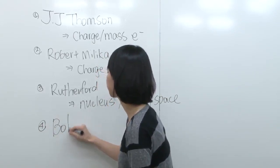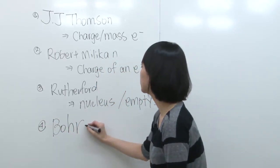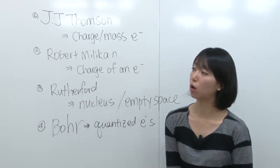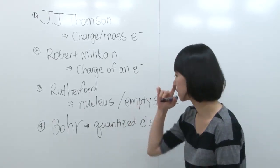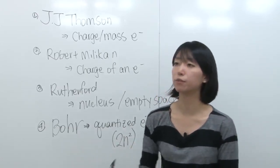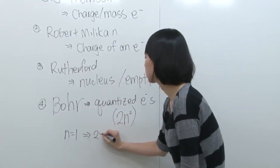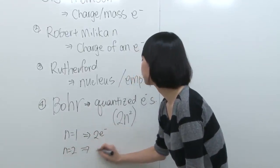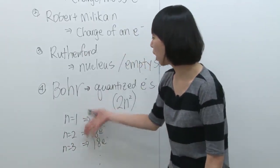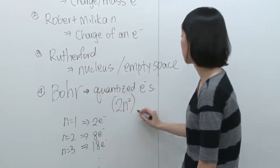Number four was Bohr. He went more specific about the atomic structure and the energy levels of electrons — he quantized electrons. He said there are different energy levels inside the atom, and it's 2n squared, meaning each energy level can have a different number of electrons. For example, n=1 can have 2 electrons, n=2 can have 8, n=3 can have 18, and so on. As you go farther from the nucleus, energy gets higher. Then we talked about the emission spectrum.